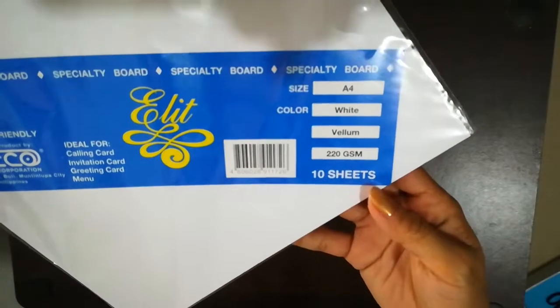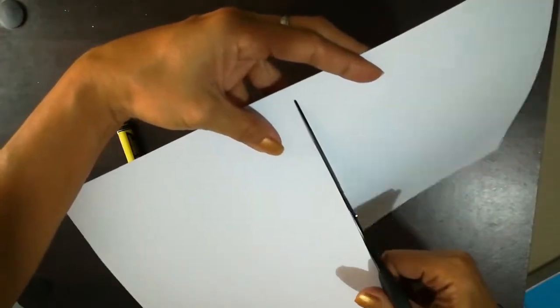Get your vellum paper and cut it into different shapes. This will be used for your visual aid pieces.